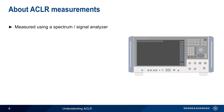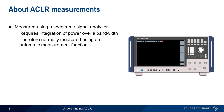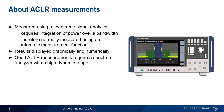ACLR is measured using a spectrum or signal analyzer. Recall that ACLR measurements involve summing up or integrating the total power in each channel, and thus ACLR measurements are normally performed using a special automatic measurement function. Results are typically displayed both graphically and numerically. When choosing a spectrum analyzer for measuring ACLR, high dynamic range is the most important parameter, since ACLR measurements require the accurate measurement of both very high and very low power levels.